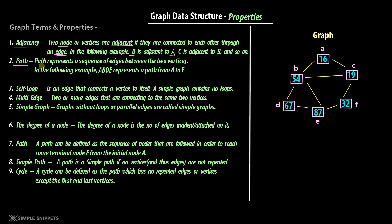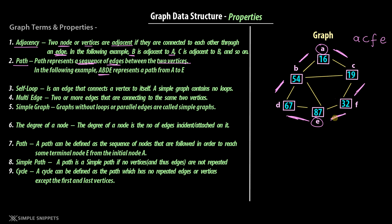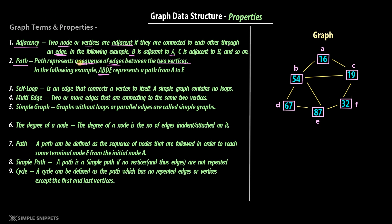The next term is path, and a path is nothing but a sequence of edges between two vertices. In the following example, A-B-D-E represents the path from A to E: A to B, B to D, and D to E — that's one path. There is also another path to E: A, C, F, E — which is A to C, C to F, and F to E. So there can be multiple paths between two particular vertices.